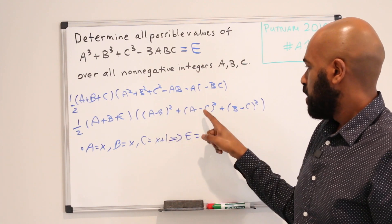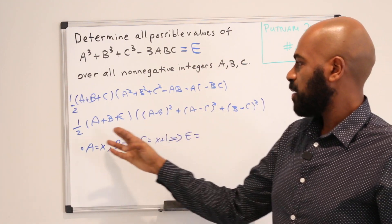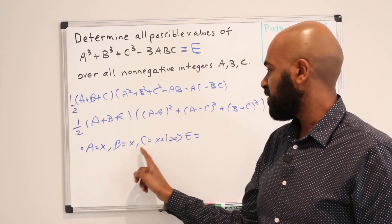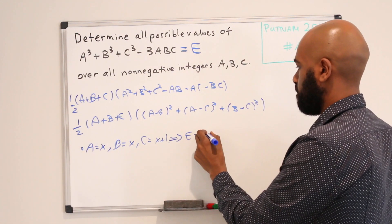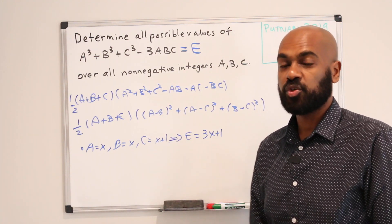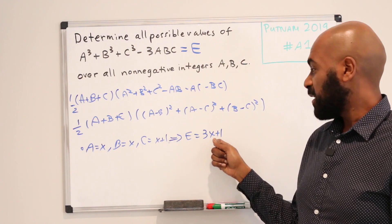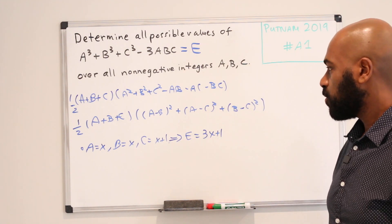this here is 0, this is 1, and this is 1, and so this entire expression is 2. Divided by this 2 is 1, and here we'll have the sum of these values which is 3X + 1. So if we let X range over all possible non-negative integers, we get all non-negative integers that leave a remainder of 1 when divided by 3. Cool.